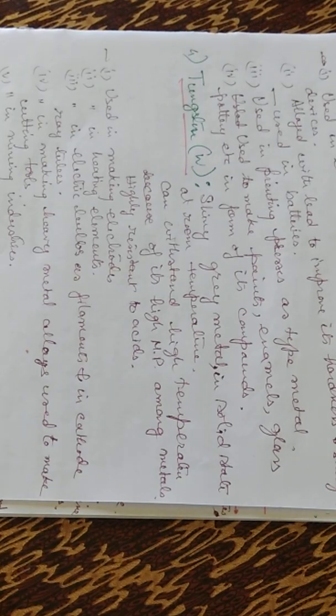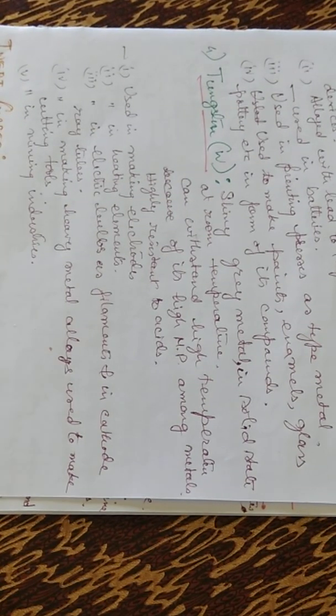Now tungsten. Tungsten though it is a metal, tungsten is a shiny gray metal in the solid state at room temperature. It can withstand high temperature because of its high melting point among metals and high resistance to acids.